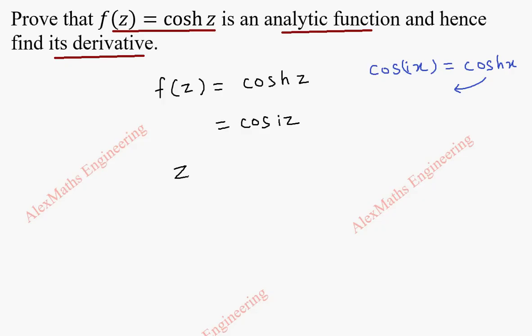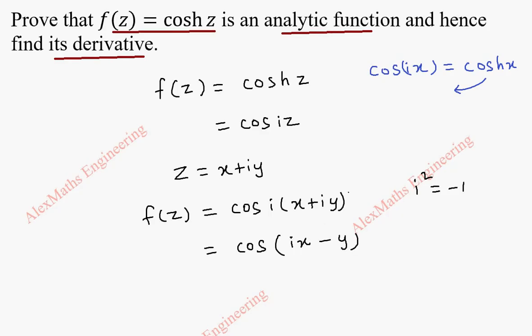Now, z is x plus iy. So, f of z becomes cos of i into x plus iy. When we multiply i inside, it is going to become ix. And i squared is minus 1. So, this is minus y.